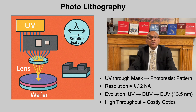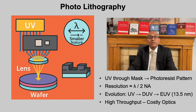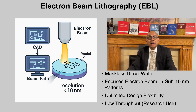Resolution depends on the wavelength lambda and the numerical aperture of the optics, with an approximate limit of lambda divided by 2 times NA. To achieve smaller features, industry has evolved from near UV to deep UV at 248 nanometers and 193 nanometers, immersion lithography, and currently extreme UV. Photolithography offers high throughput and wafer-scale precision, but demands costly optics, masks and alignment systems.